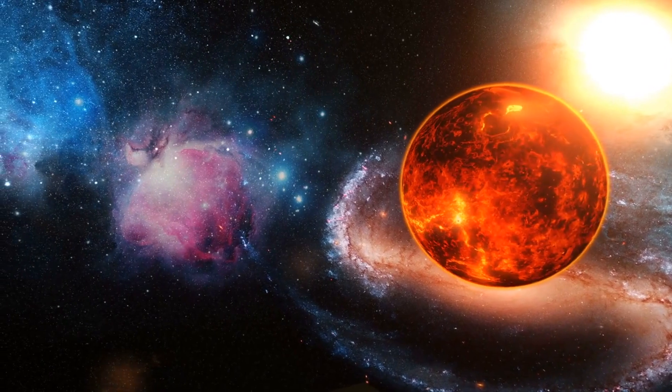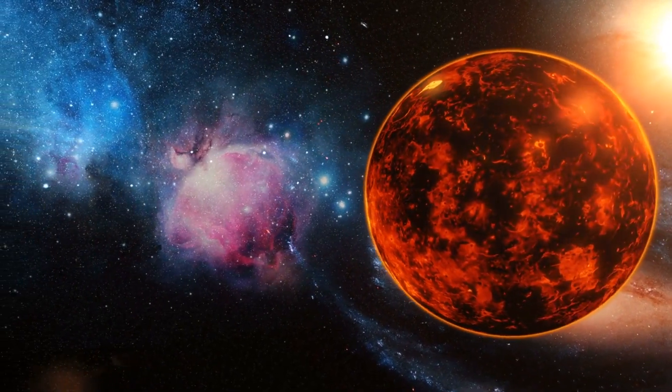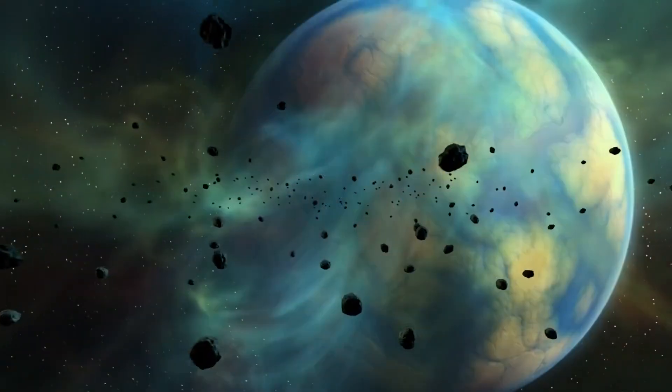Imagine Mercury, with its elliptical orbit, slowly getting nudged closer and closer to Venus over millions of years. Now the stakes are rising. As Mercury's orbit decays and its path shifts, it begins to spiral toward Venus.